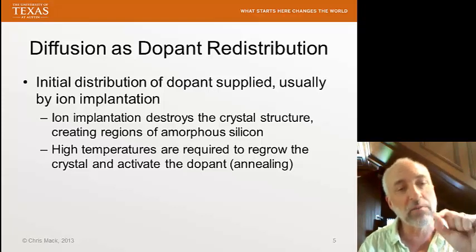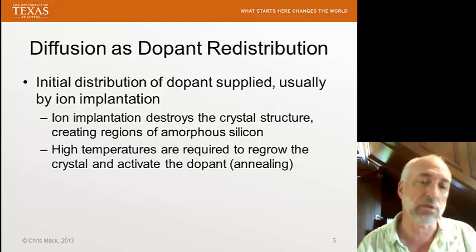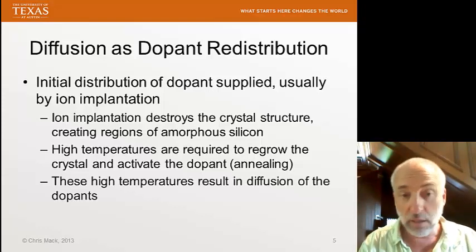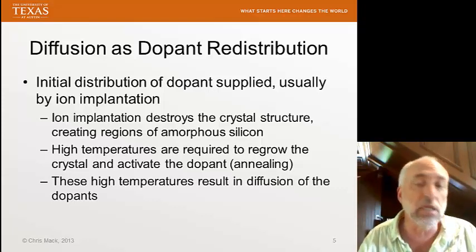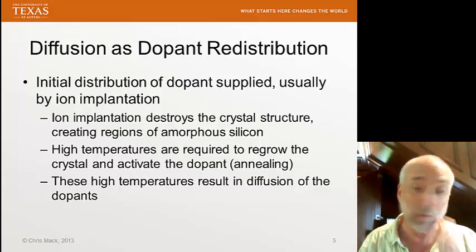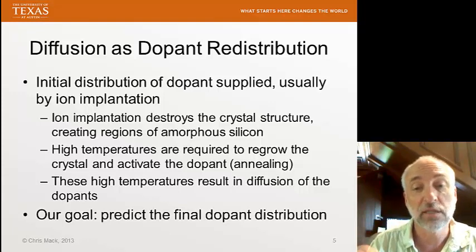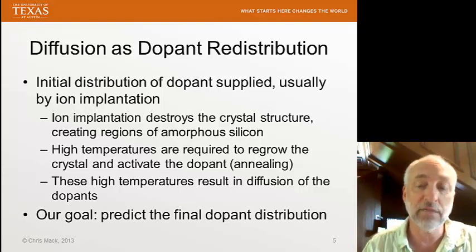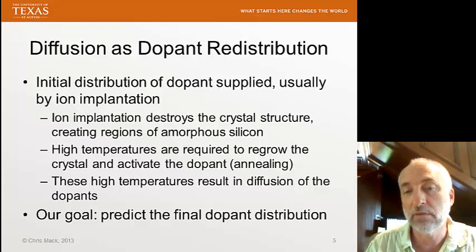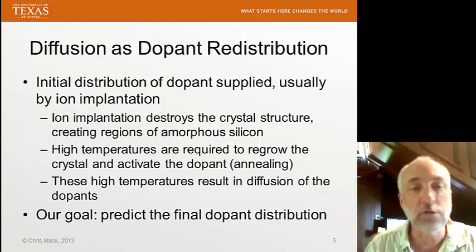At the same time, the dopants become part of the crystal structure — dopant atoms occupy lattice sites in the crystal and therefore become activated. But since we're operating this annealing step at a very high temperature, inevitably we have diffusion of the dopants. The dopants don't stay where we put them; they move around within the crystal. Our goal is to predict the final dopant distribution at the end of this diffusion and annealing step. In one sense, annealing is required to fix the damage of ion implantation, and diffusion is simply a side effect of this annealing process.